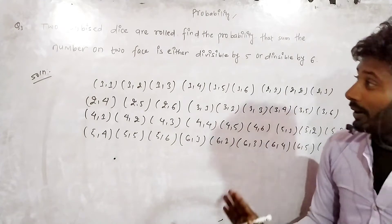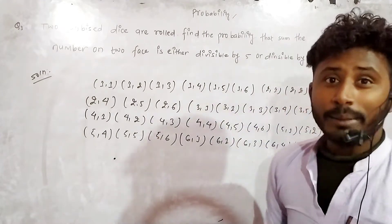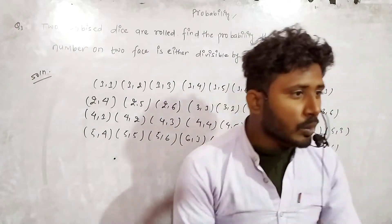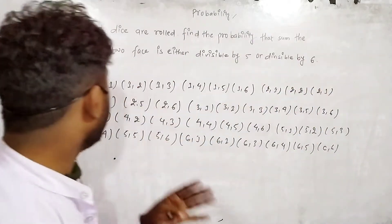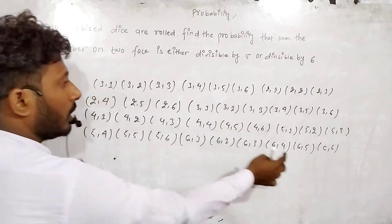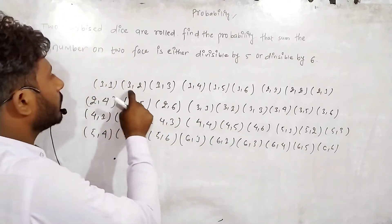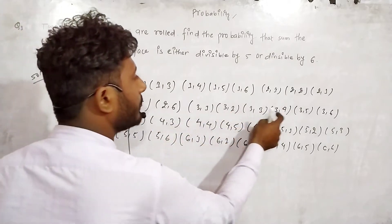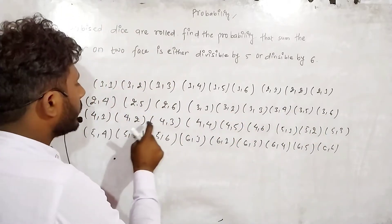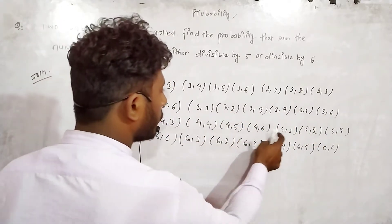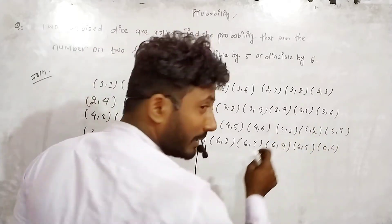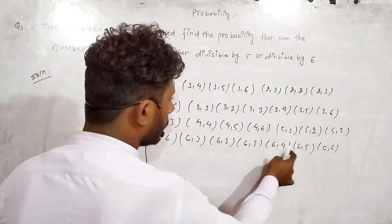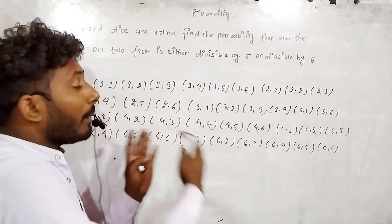Now we count the total number of outcomes in the sample space. Counting all pairs: 1 through 36. So the total number of outcomes is 36.